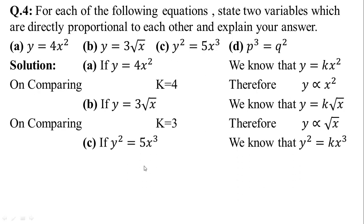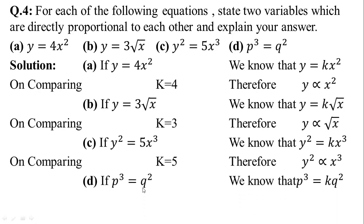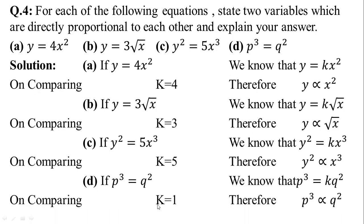In part c, y squared is equal to 5x cubed. On comparing with the standard form, y is directly proportional to x cubed. In the last part d, p cubed is equal to q squared. We know that p cubed is equal to k times q squared. On comparing, k is equal to 1. Therefore, p cubed is proportional to q squared.